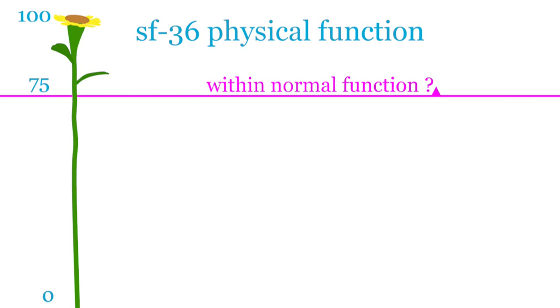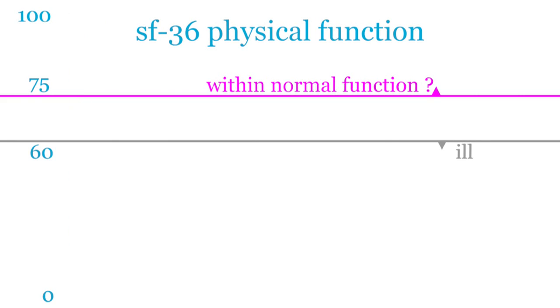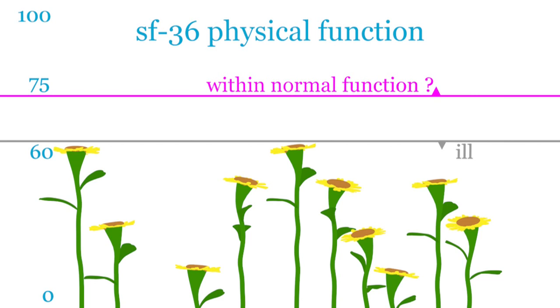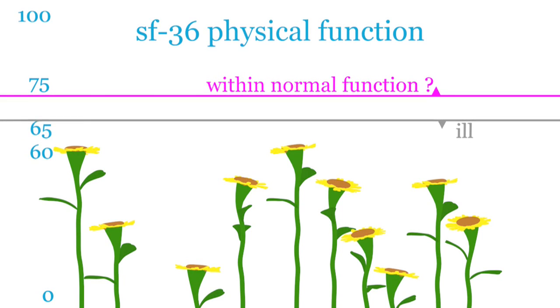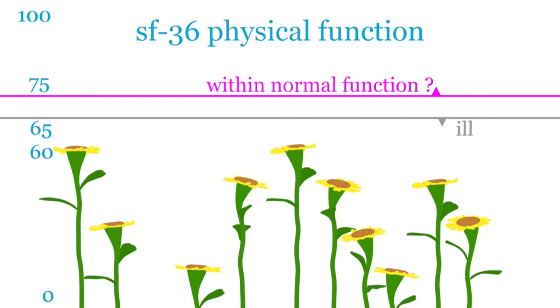At the start of the trial they chose patients scoring 60 or less to take part. This did not give them enough patients, so they raised it to 65 or less. And that added enough patients scoring 65 to make their sample sizes big enough for the trial.